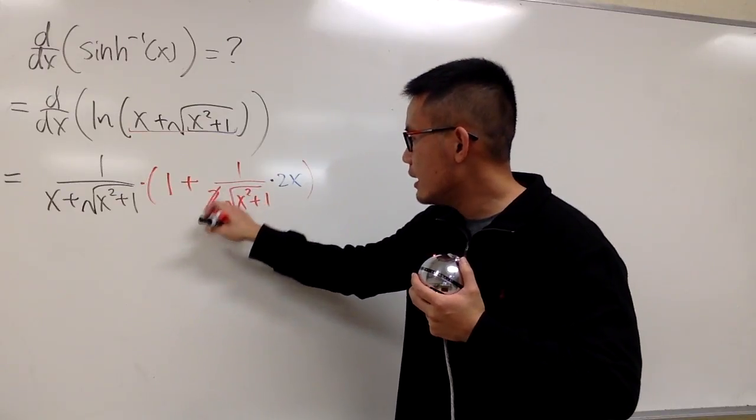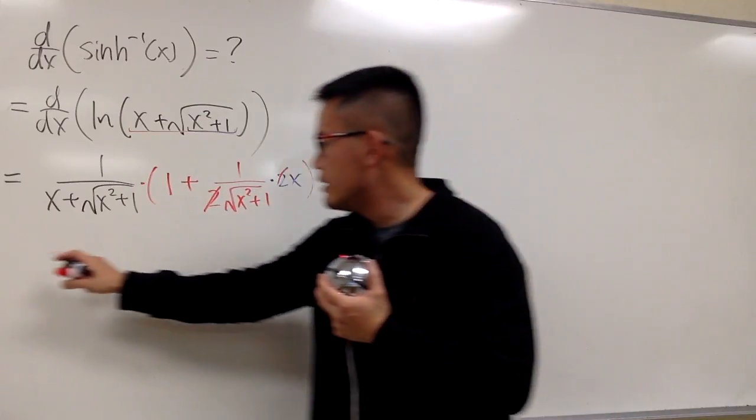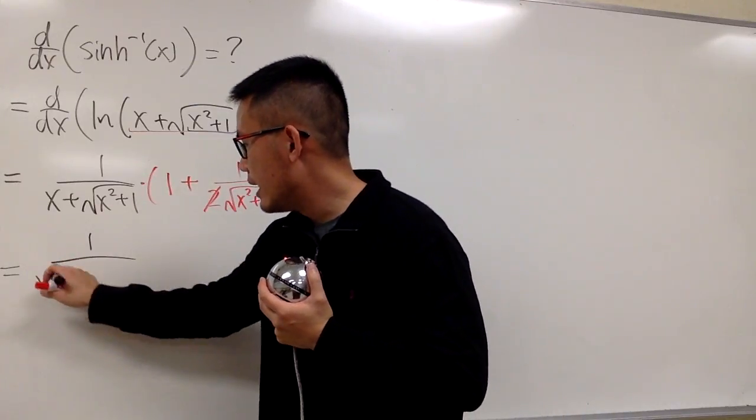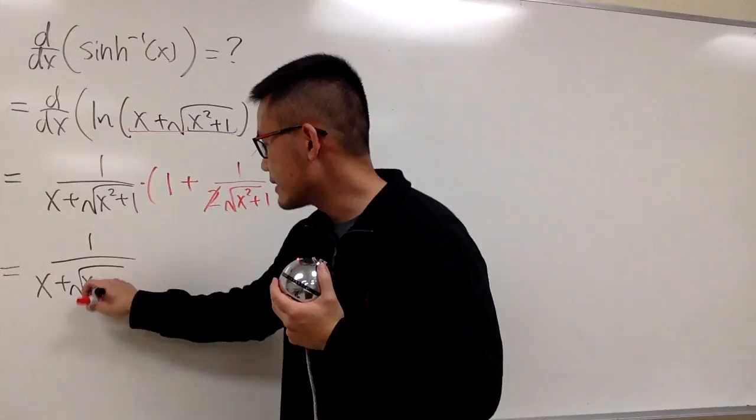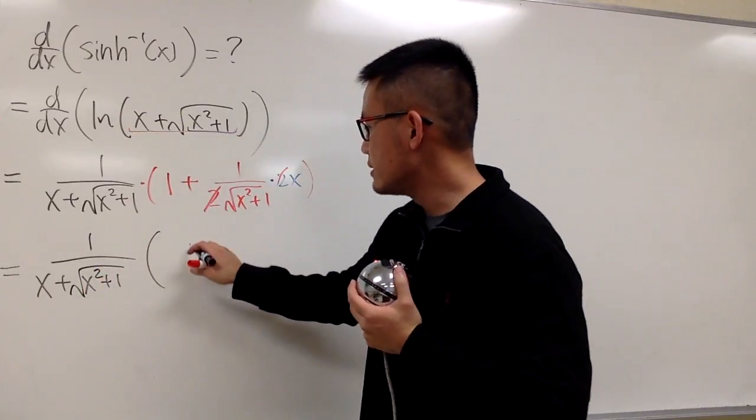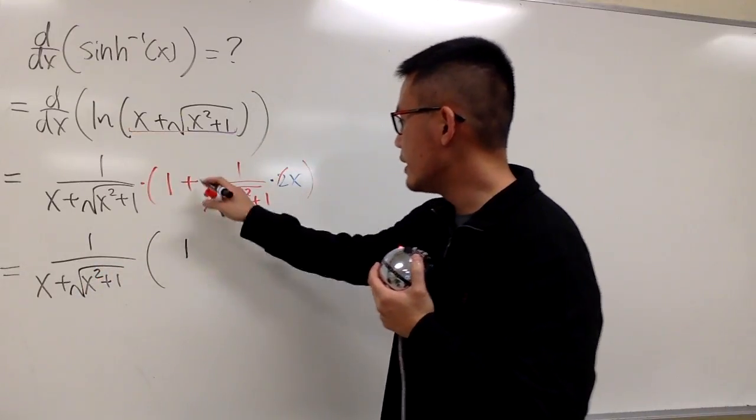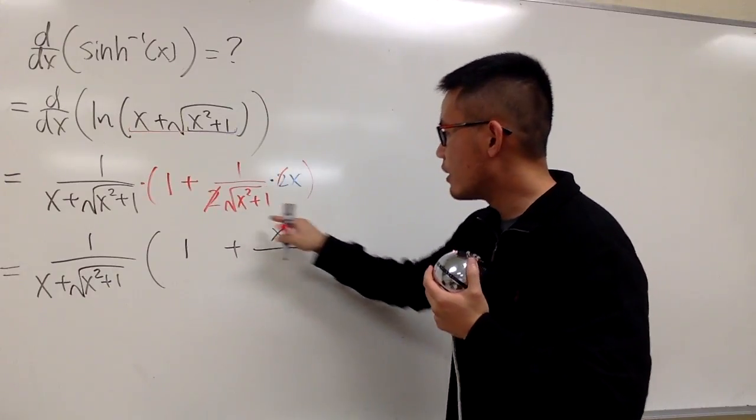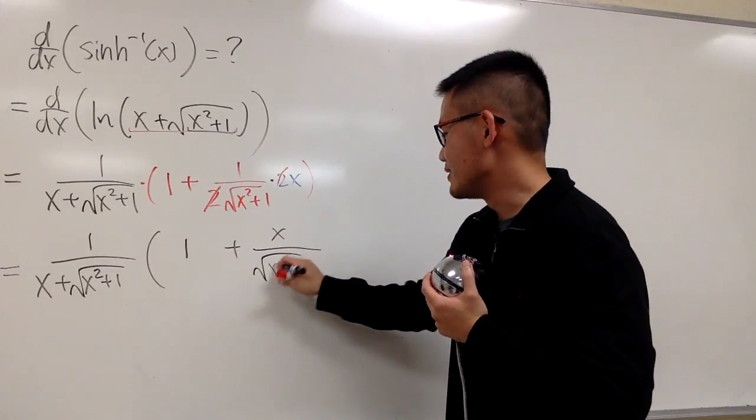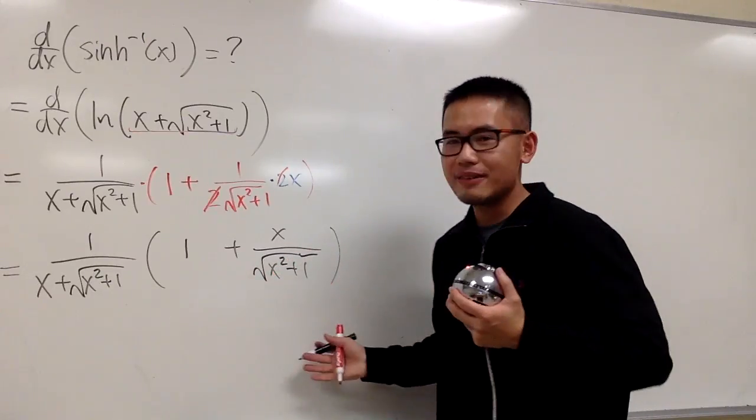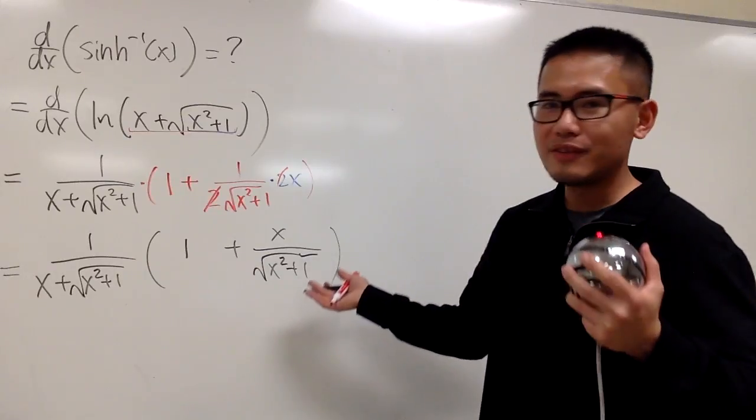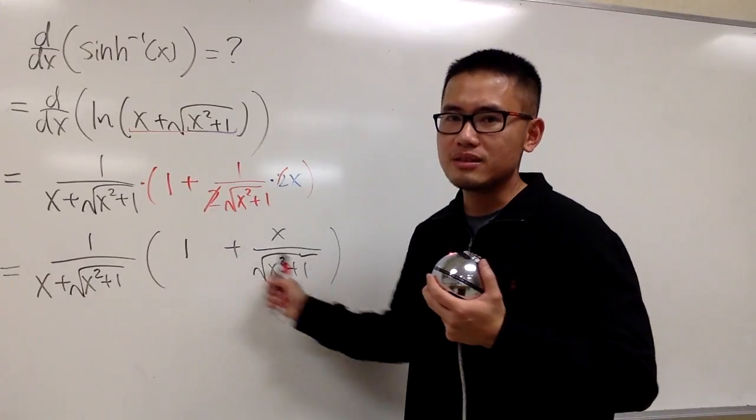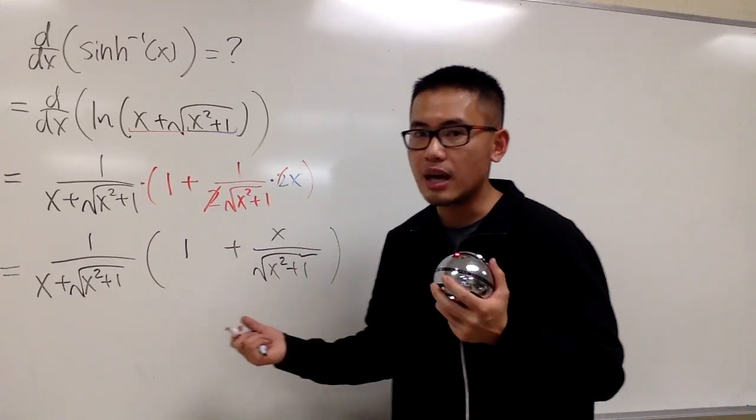Right here, we have 1 over x plus square root of x squared plus 1, in parentheses, 1 is still the 1. And then we add it with, I can put the x on the top, so I'll do that, over, I can put this on the bottom, of course it's still on the bottom. And this is what we have. Can we simplify this? We should try. First of all, inside here, we're adding things. And it's a fraction, so let's get the common denominator.